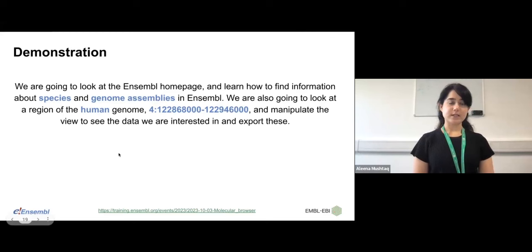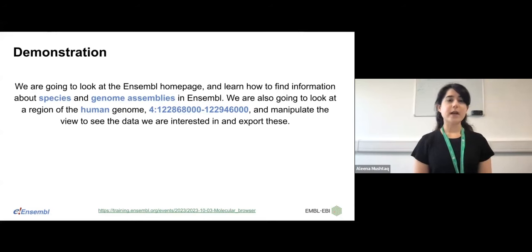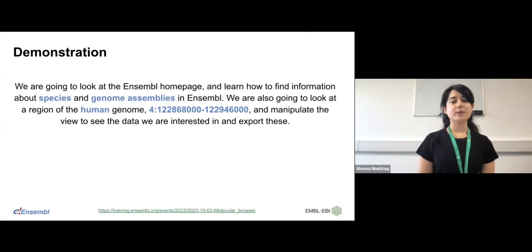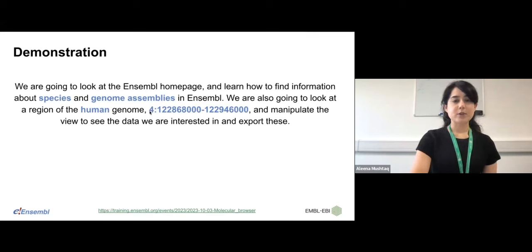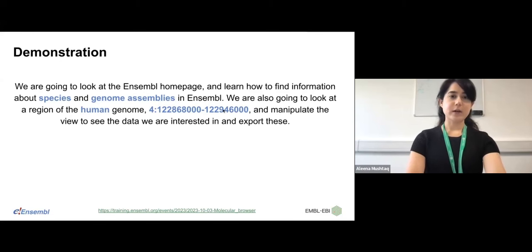I'm now going to move on to the demonstration. We are going to look at the Ensembl homepage, how you can find information about different species and genome assemblies, and then look at a specific region on the human genome — on chromosome 4. The Ensembl coordinate format uses the chromosome number followed by the start position, a hyphen, then the end position. I'll show you how you can manipulate the view to add more data that you might be interested in.